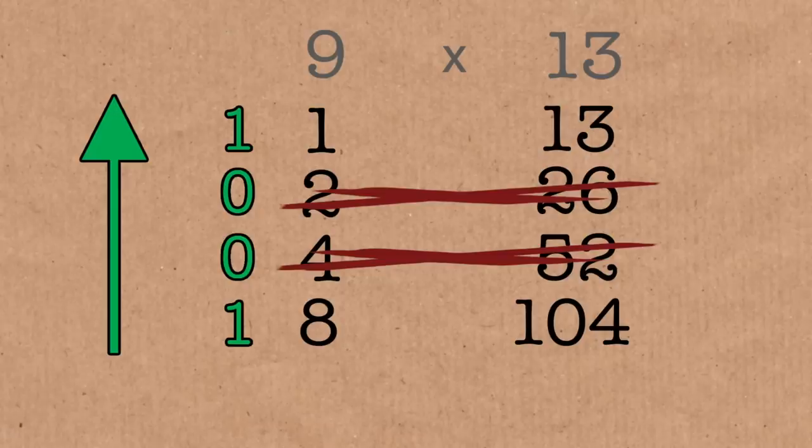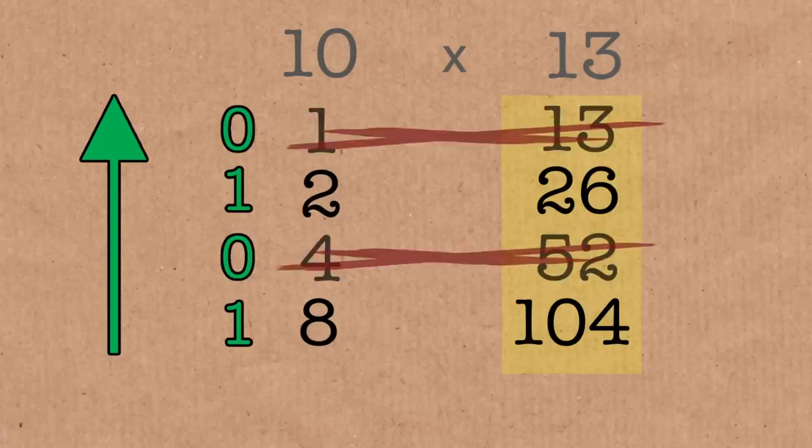The binary number for 10 would be 1, 0, 1, 0. And that would give you 8 and 2 is 10. And sure enough, 10 times 13 is 26 and 104 is 130. So all this ancient maths is linked to the very maths that makes our computers work, our televisions work, our satellites and everything else. Digital information. It's what makes the world go round today.